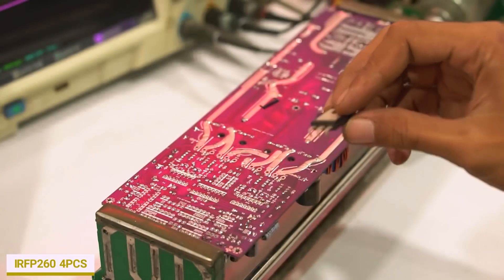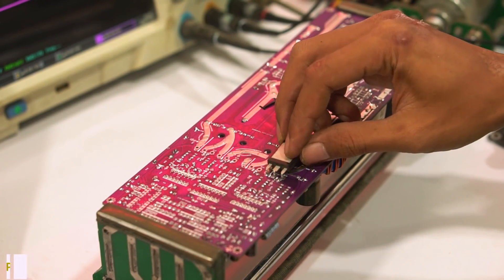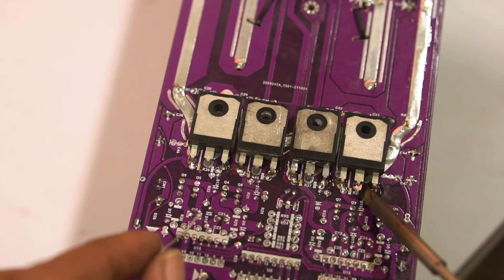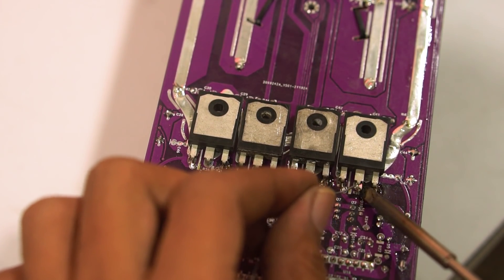For the MOSFETs, I'm using IRFP260, 4 pieces. This is sufficient for the Class D full bridge D2x5 amplifier.